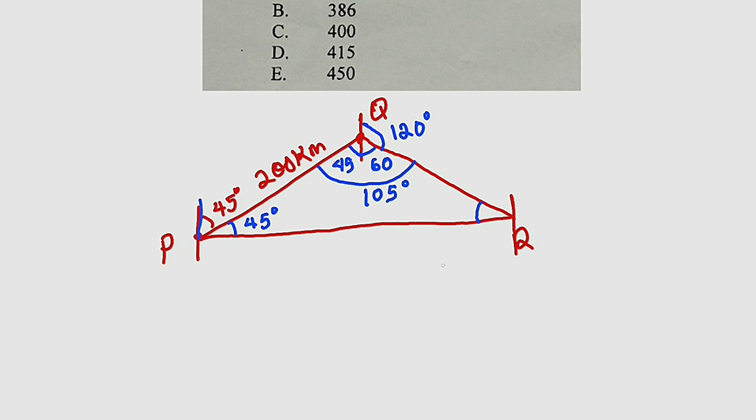Now we need this particular angle again. You should know that the sum of all the three angles in a triangle equal to 180. So to find this particular angle, you can take away this and this from 180. And if you do that, you are going to get 30 degrees.